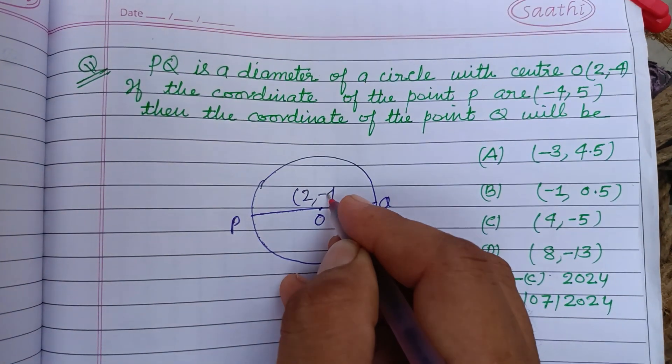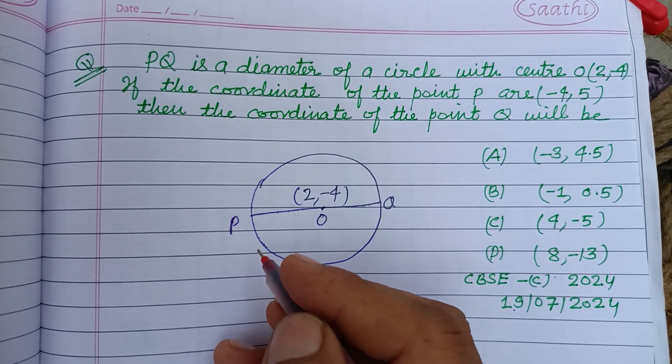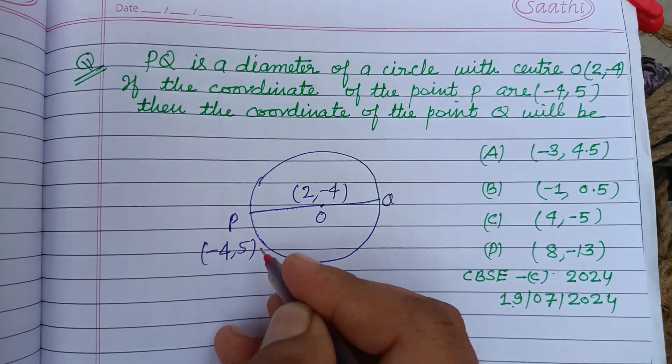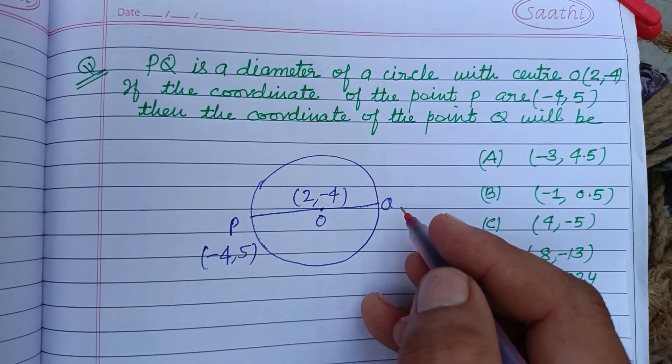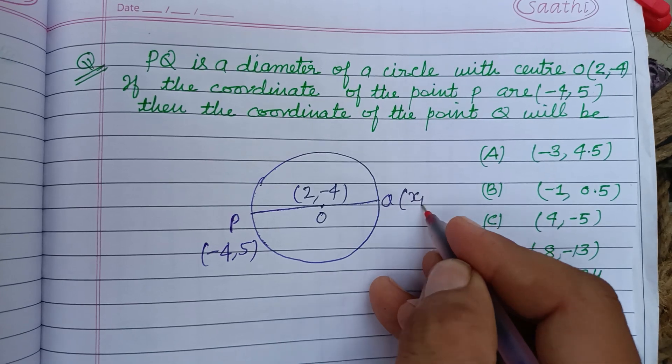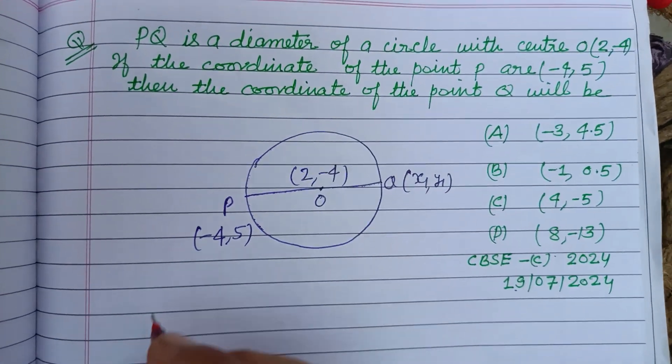P, Q, center of the circle is O which is (2, -4). The coordinates of the point P are (-4, 5). Then the coordinates of the point Q will be, so let this be (x1, y1).